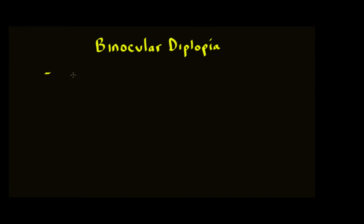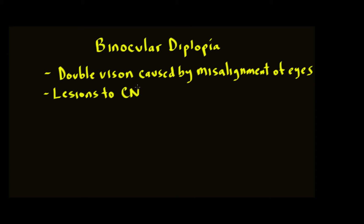This means double vision caused by misalignment of the eyes. These things are caused generally by lesions occurring to cranial nerve three, the oculomotor nerve, cranial nerve four, the trochlear nerve,